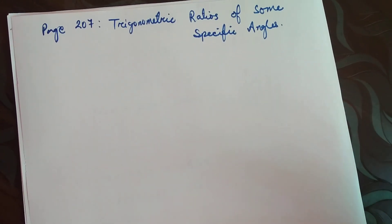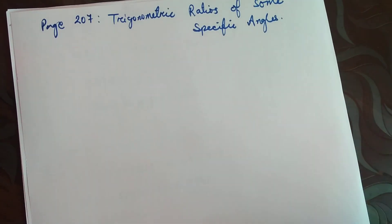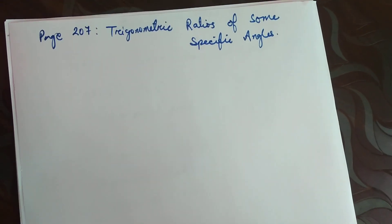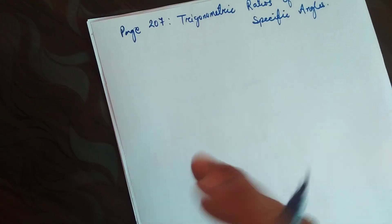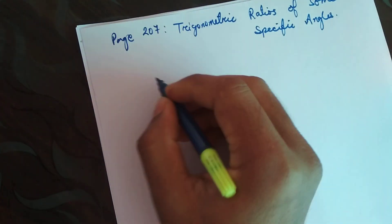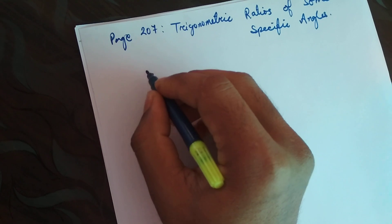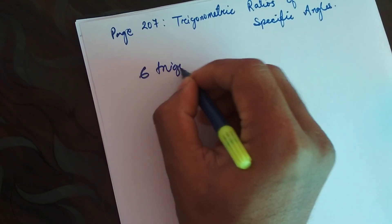Those who have not completed 8.1, I would request you to please complete it at the earliest time. So today's topic is trigonometric ratios of some specific angles. As I have told you before, there are six trigonometric ratios.